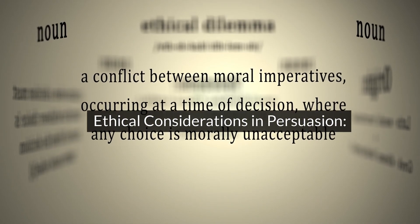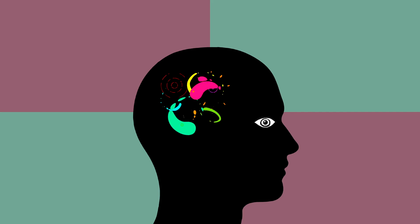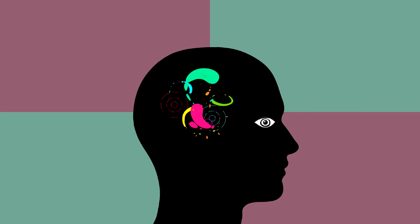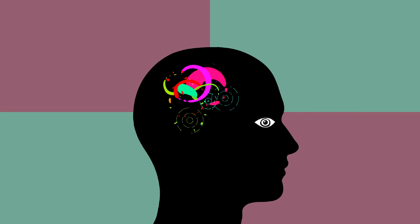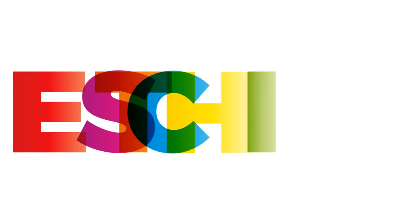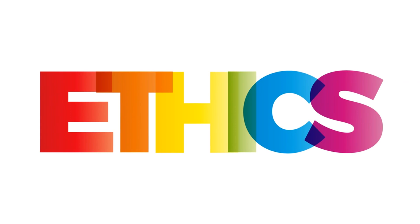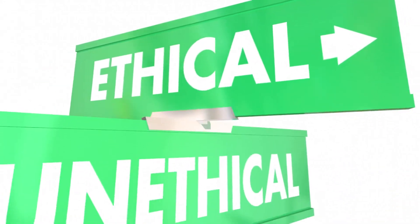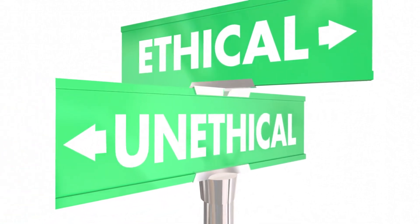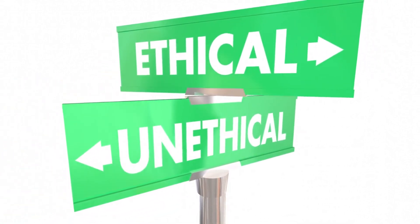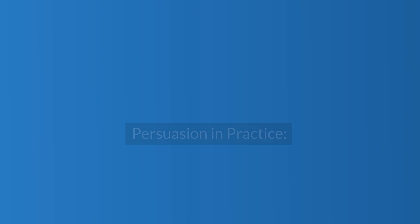Ethical considerations in persuasion. But with great power comes great responsibility. Persuasion can be used for good or for ill, and ethical considerations are paramount. Being honest, transparent, and respecting people's autonomy are crucial ethical principles in persuasive communication. It's essential to use persuasion responsibly and ethically, ensuring that we're not manipulating or coercing others into making decisions against their will.